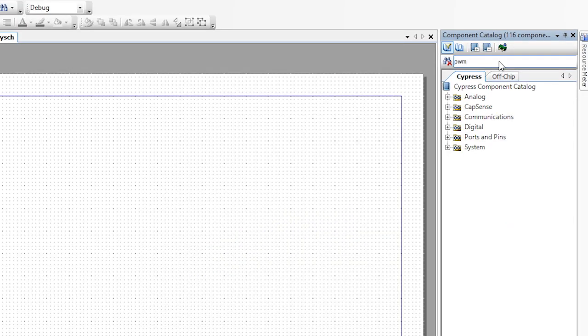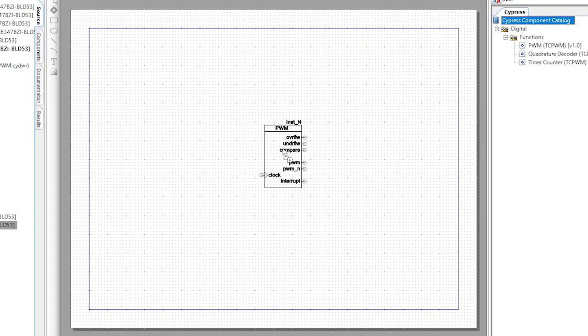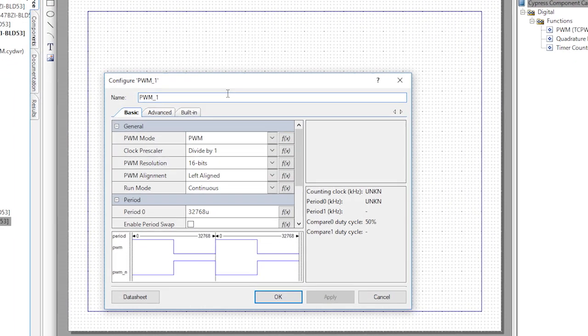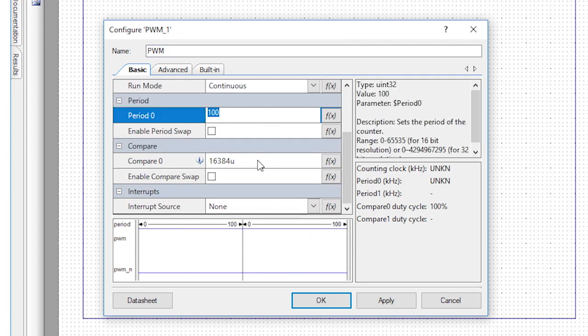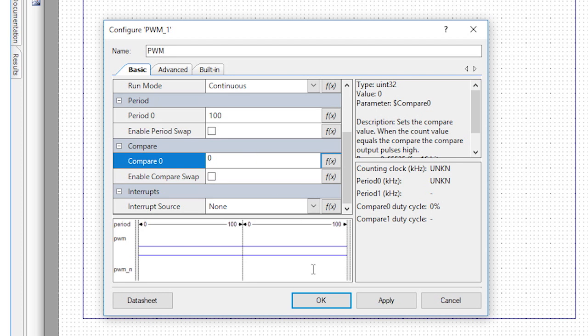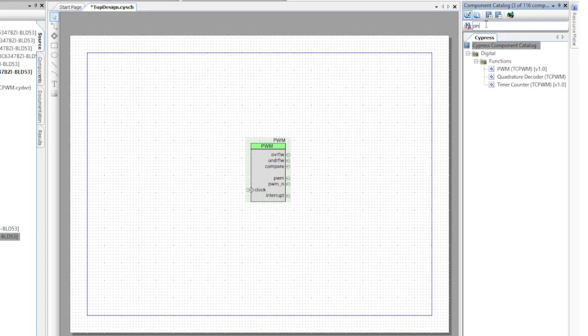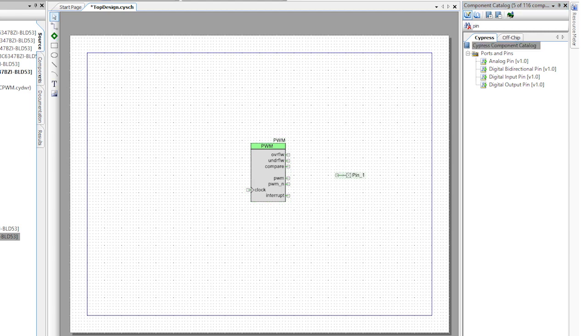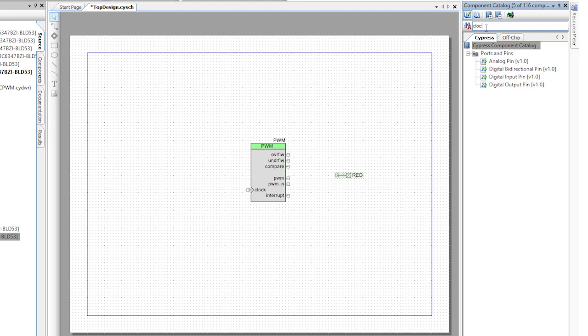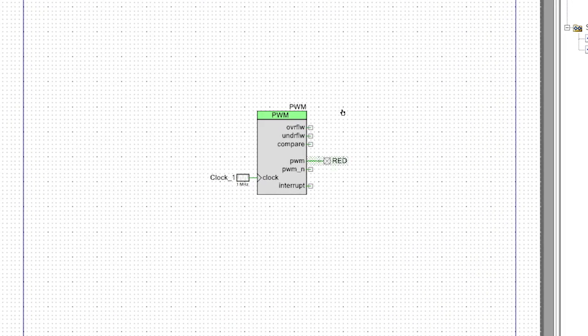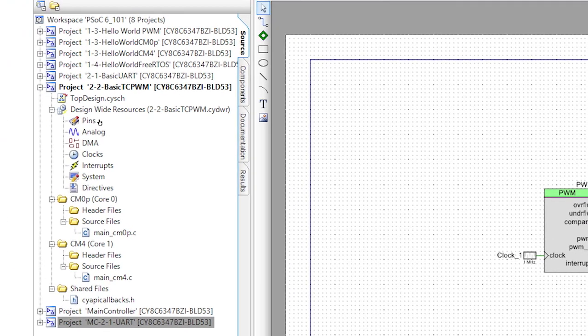Start by adding the TCP PWM component by dragging and dropping it into the schematic. Let's rename it PWM and set the period to 100 and the compare value to 0. I will now drag in a pin component. Again, we'll rename that component to red. Now for the clock, drag and drop that component and we'll keep it at its default configuration. Make sure you wire the clock to the PWM and the output pin to the PWM, as I did when I dragged the components into the design.